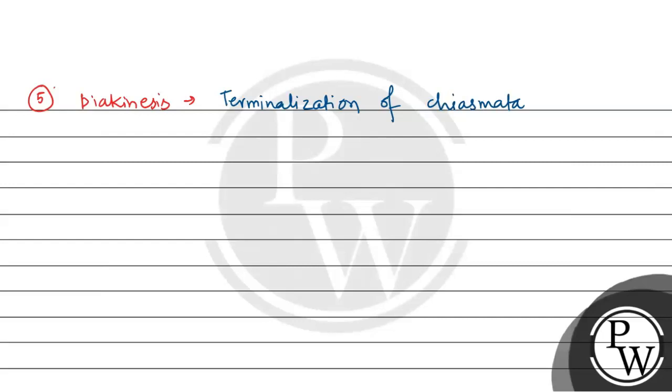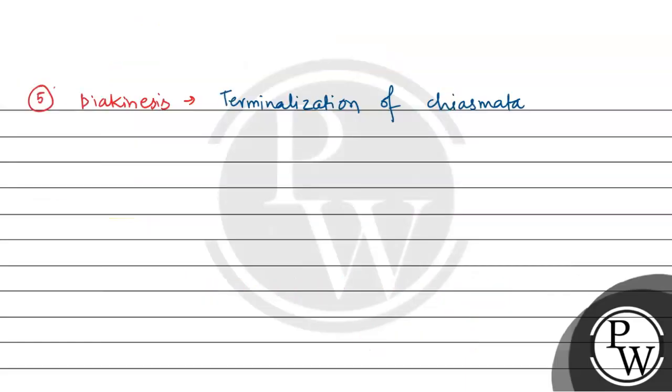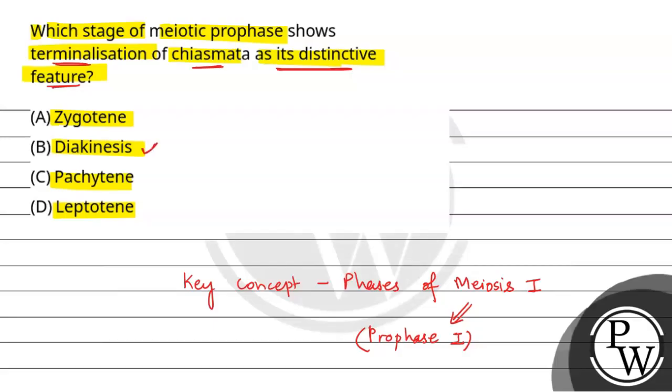So coming back to the question, which stage of meiotic prophase shows the terminalization of chiasmata as its distinctive feature. We have seen the terminalization of chiasmata in the last stage which is the diakinesis stage.